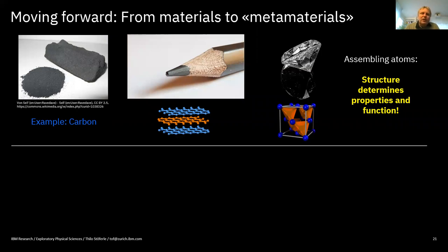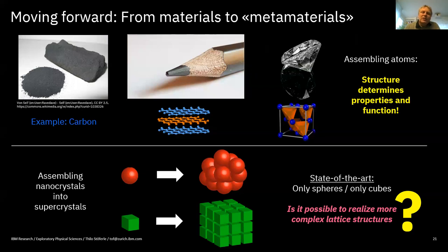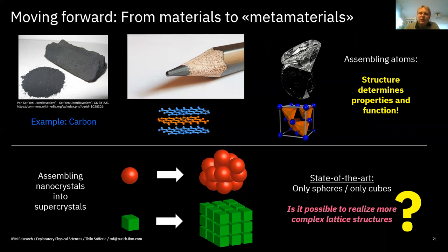Beyond simple cubic superlattices, one can engineer more complex structures — just as carbon arranged amorphously filters sewage water, in layers gives graphene, and in diamond structure gives diamonds. Structure determines properties and function. With nanocrystals, state-of-the-art has been spherical nanocrystal assemblies into large spheres or cubic nanocrystals into supercubes. But the question arises: can you engineer more complex lattice structures with perovskite nanocrystals?